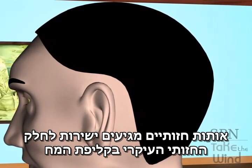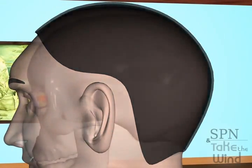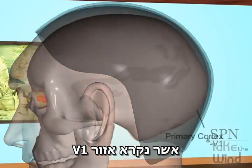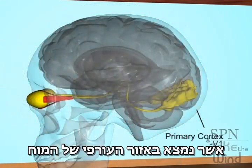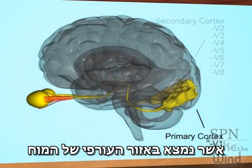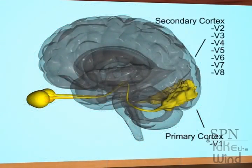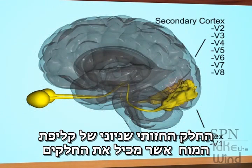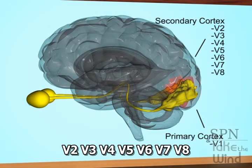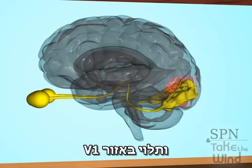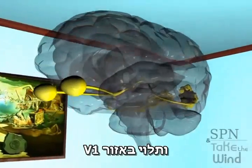Direct visual signals arrive into the primary cortex, called the V1 region, which is located in the occipital region of the brain. The secondary visual cortex, which comprises V2, V3, V4, V5, V6, V7, and V8 regions, depends on the V1 region.